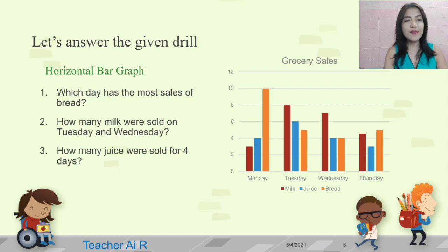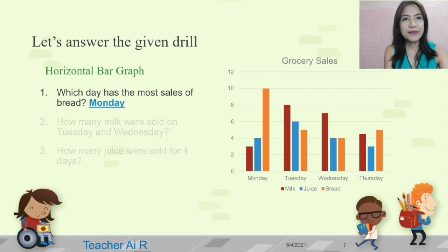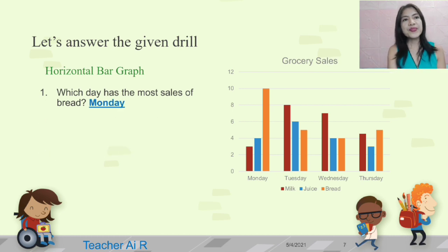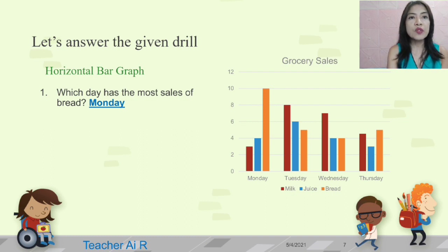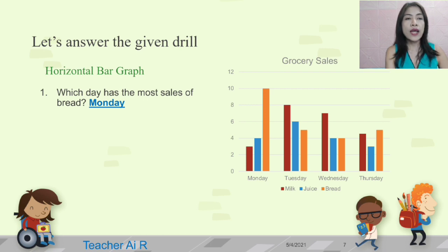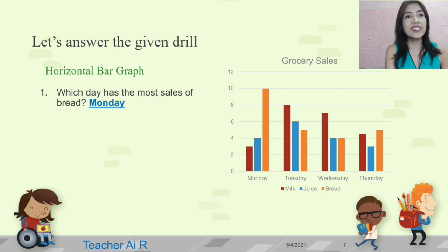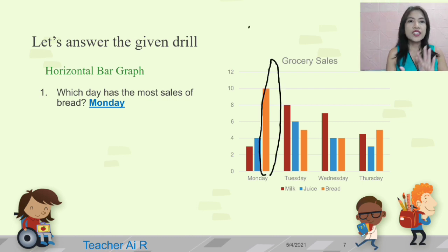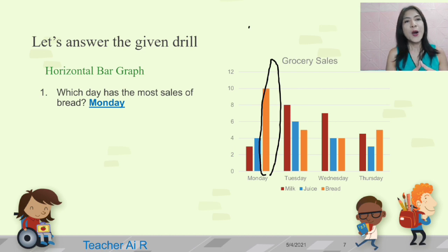For number one, which day has the most sales of bread? The bread is in orange. The one with the highest bar is on Monday. If you could see, it's on Monday with the highest bar of bread.